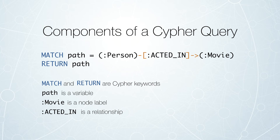The components of a Cypher query were also covered in the last episode. You can see here we have our different Cypher keywords — match and return. We have a variable called path, and we have a node label and a relationship. In this case, we're looking for people who acted in movies and return both the nodes and the relationships that match that by returning the path.